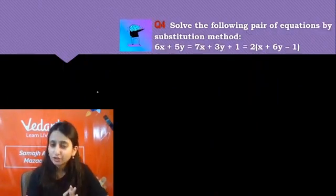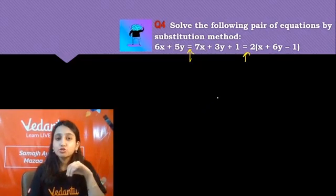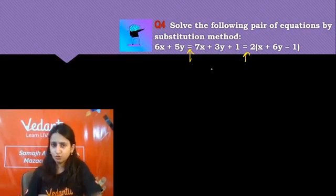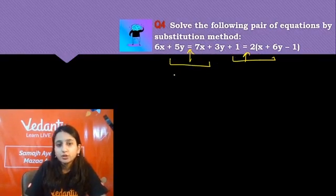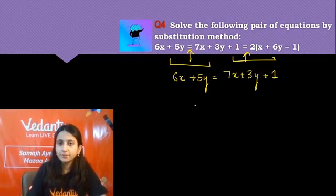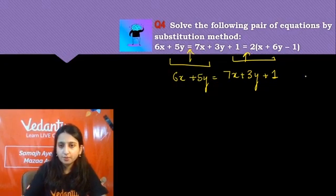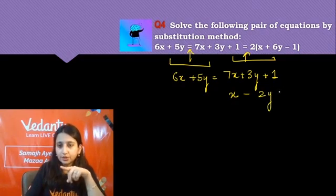Let's see the next question. We have 3 equations with two equal signs. What we have to do is first equate the first two expressions, then equate the next two. Taking 6x: 7x minus 6x gives x, then 5y minus 5y gives 0 and minus 2y, plus 1 equals 0. This is my first equation.